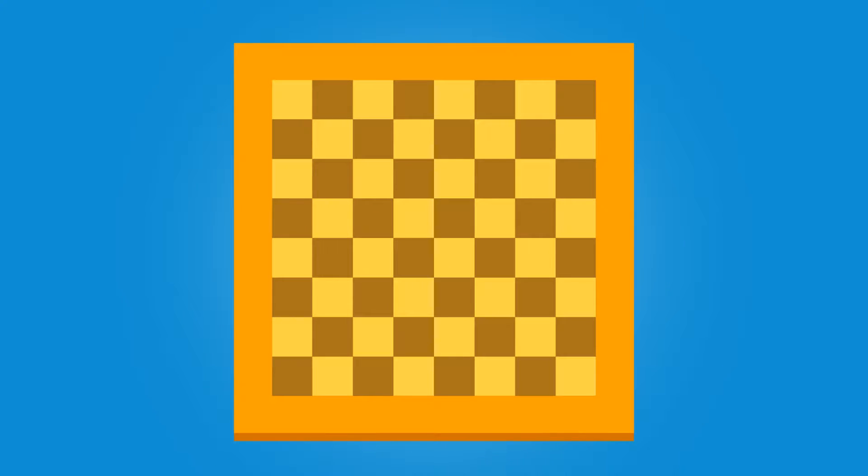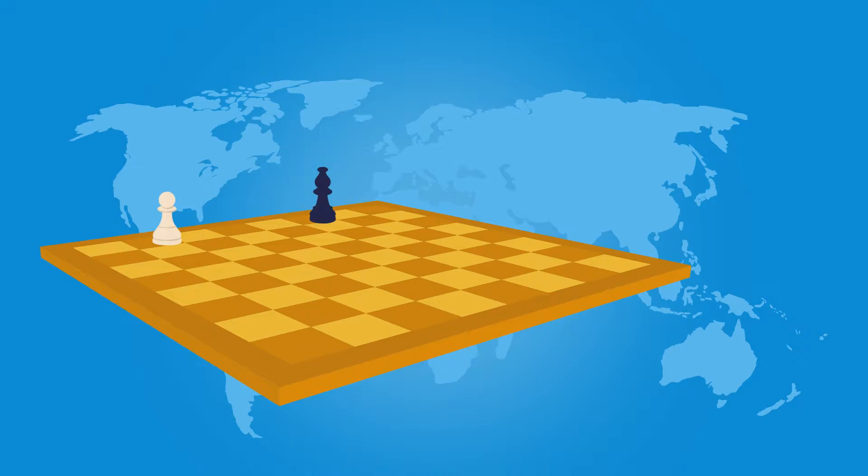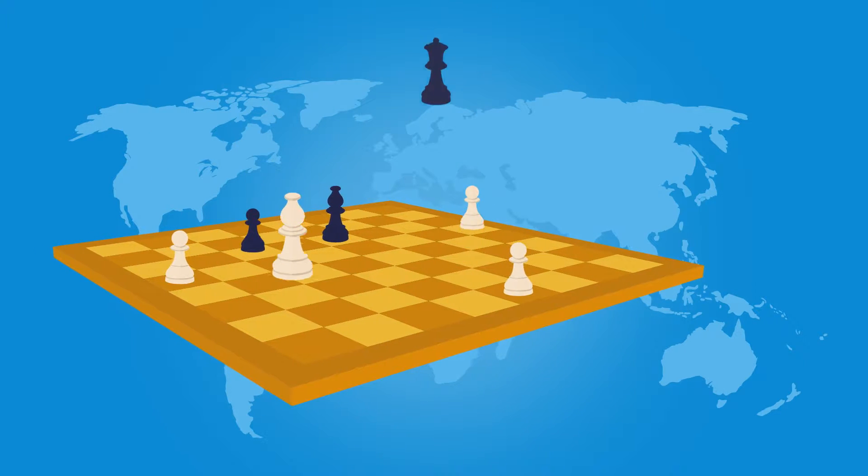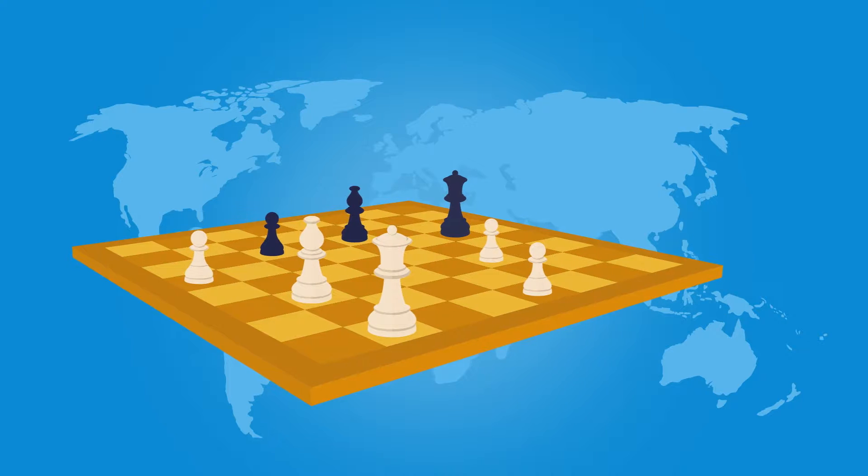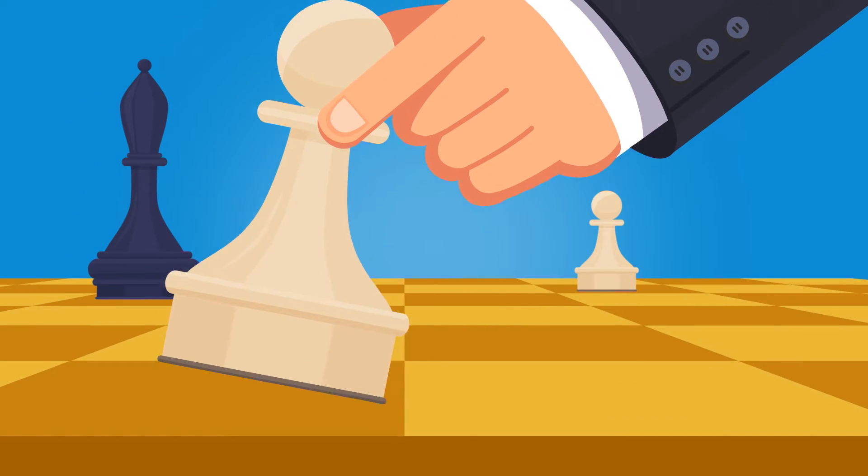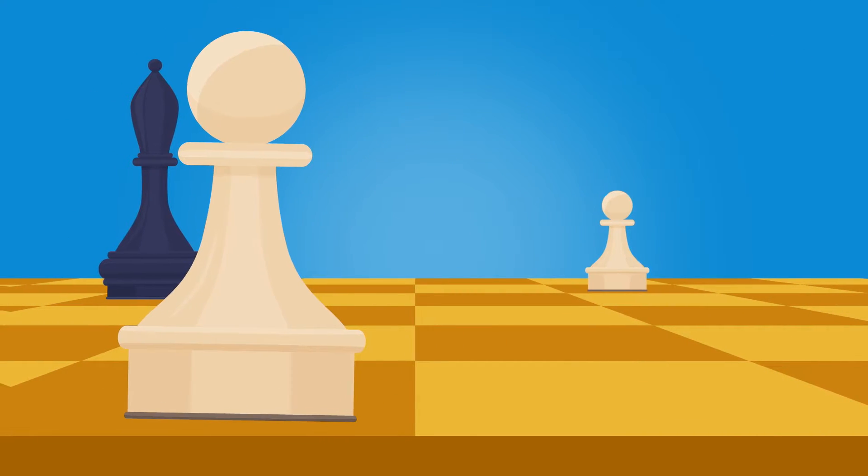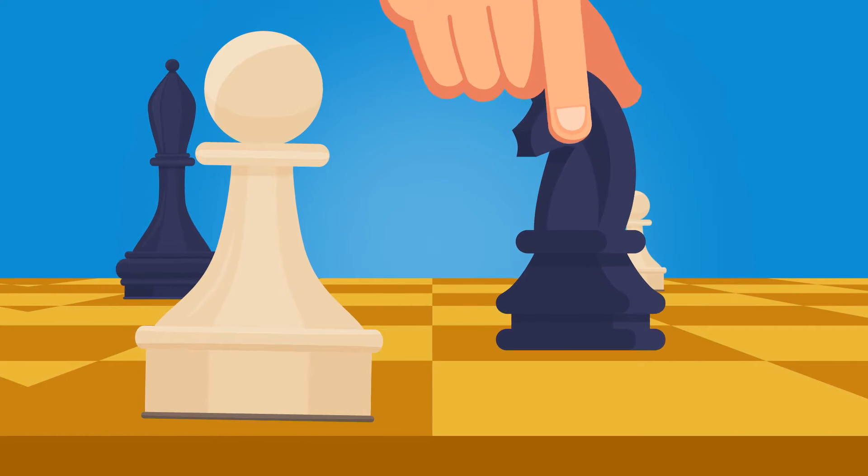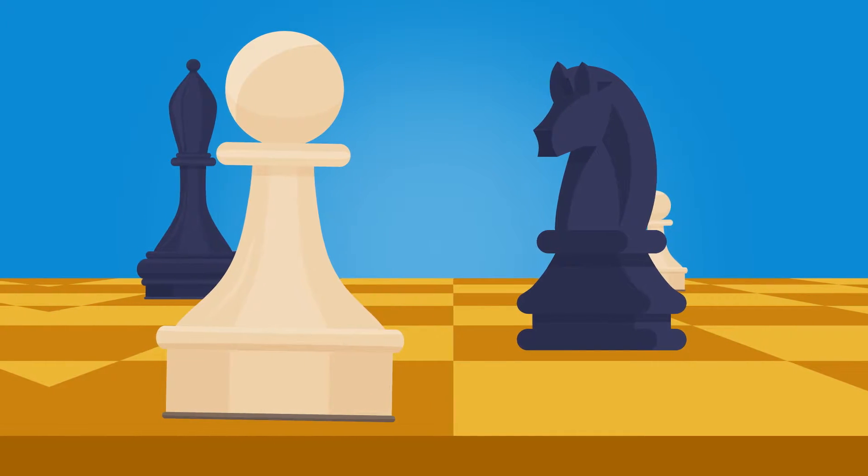Maybe you've seen one of these before. Now imagine that you were trying to tell a friend living thousands of miles away about a game you played or a cool move you made. You're not sitting right in front of them, so you can't show them with your hands. And you can't say, first I move my pawn here, then my knight there, because there is no here or there when you're not sitting face to face.